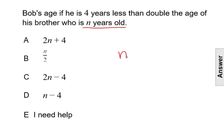So he is four years less than - automatically, less than is a clue word for subtraction - but then we have double, which is like multiplying by two, that age of n years old.